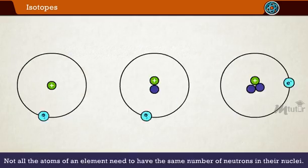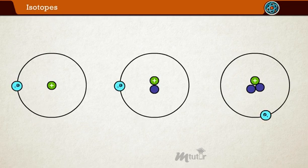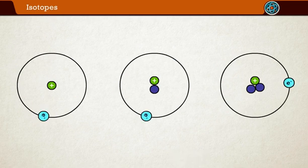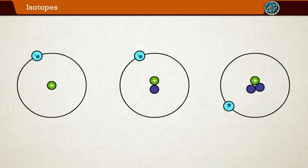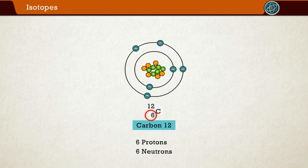Not all the atoms of an element need to have the same number of neutrons in their nuclei. In fact, it is precisely the variation in the number of neutrons in the nuclei of atoms that give rise to isotopes. Take carbon for example. Carbon has six protons and is atomic number six.